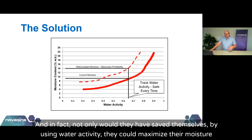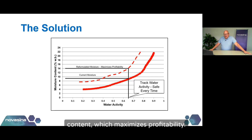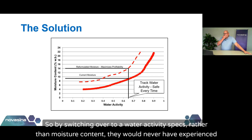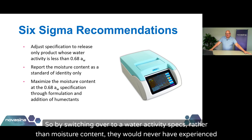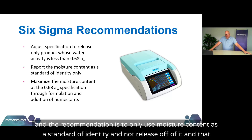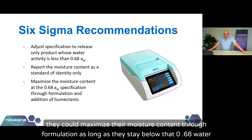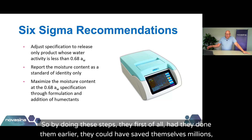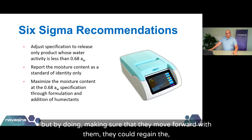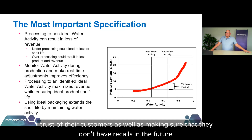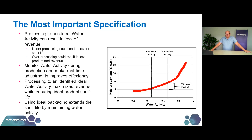Not only would they have saved themselves by using water activity, they could maximize their moisture content, which maximizes profitability. As long as they track water activity and make sure it's less than 0.7, it will be safe. By switching over to a water activity specification rather than moisture content, they would never have experienced the recall they did, and going forward would prevent any recalls in the future. The recommendation is to only use moisture content as a standard of identity and not release off of it. They could maximize their moisture content through formulation as long as they stay below 0.68 water activity. Had they done these steps earlier, they could have saved themselves millions. By moving forward with them, they can regain the trust of their customers and make sure they don't have recalls in the future.